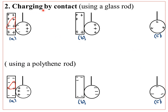Now let's look at the second method: charging by contact. When we say two things are in contact, it means they are actually touching each other. We'll start with the procedure using a glass rod, which is always positively charged. The apparatus required are: a polystyrene ball coated with aluminum, a silk thread, a glass rod, a silk cloth, a polystyrene rod, and a woolen cloth — the woolen cloth is used to generate the positive charges on the glass rod.